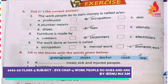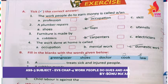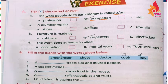Our first question is: the work people do to earn money is called an occupation. Okay? For the work people do to earn money, what do we call it? Occupation.